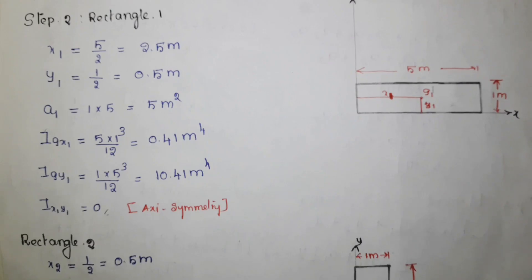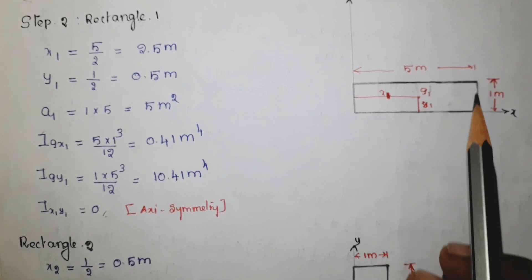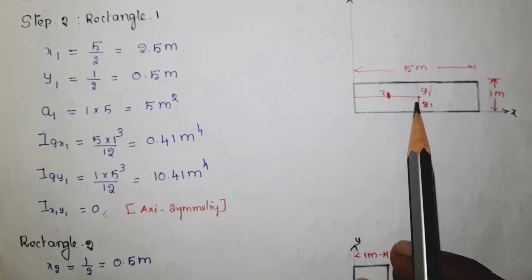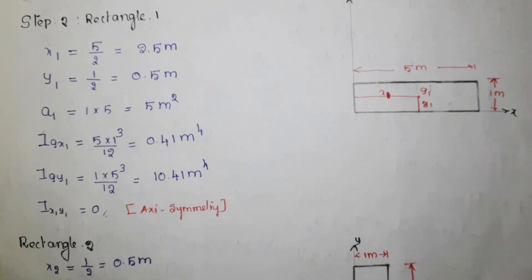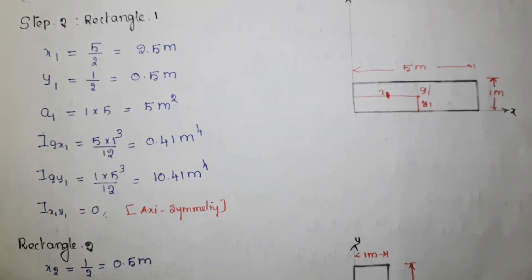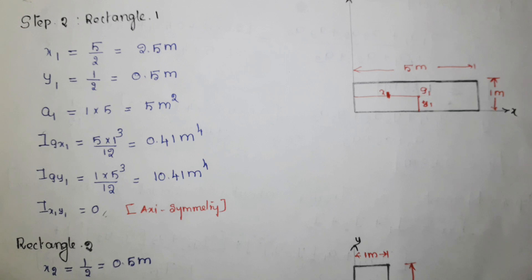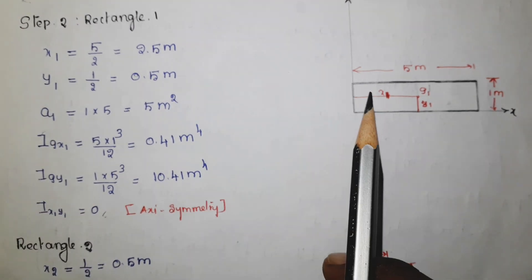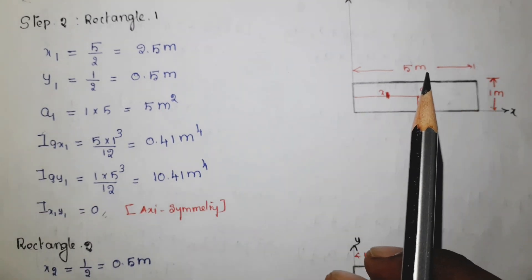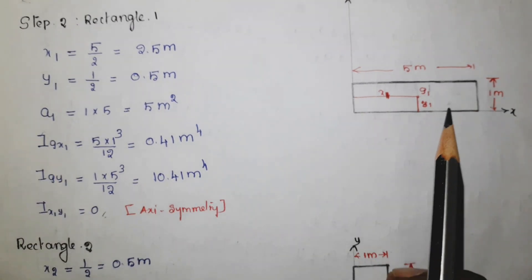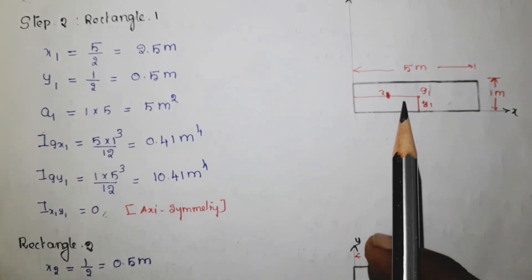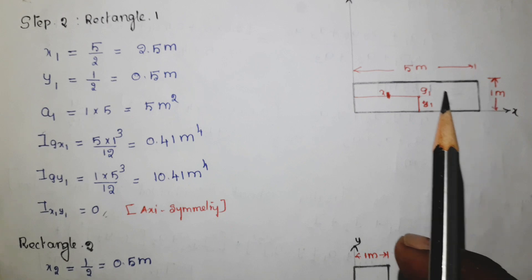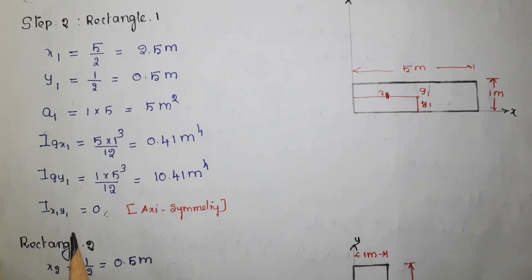The next step is finding the values for the six variables. For section 1: x1 equals 5 meter by 2, y1 equals 1 by 2 which is 0.5 meter, and a1 equals 5 into 1, so the area is 5 meter squared.